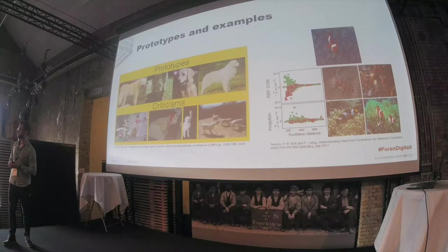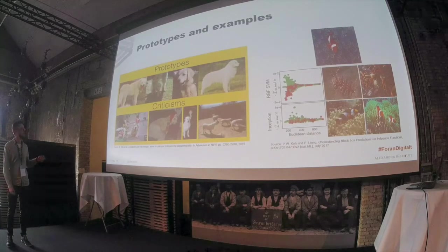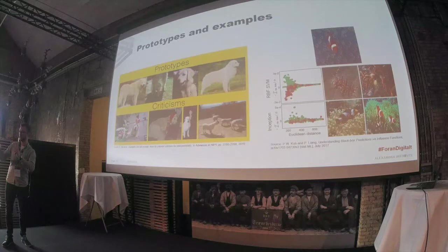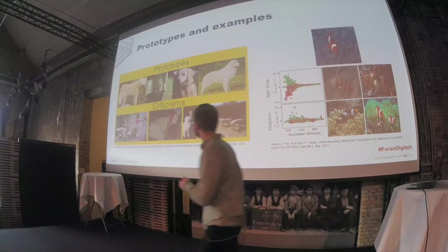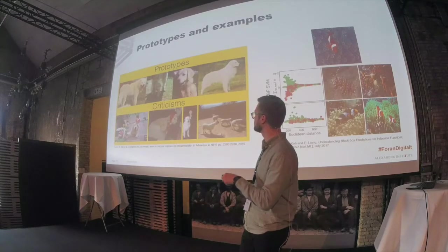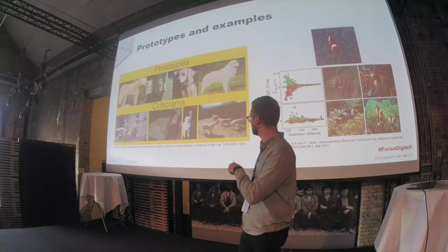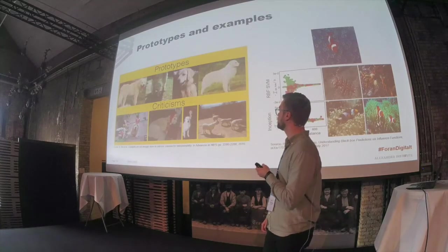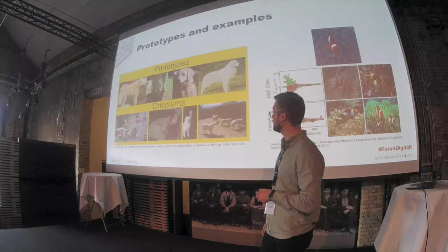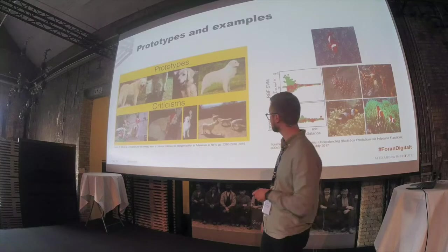You can also look at examples in the training data. One approach finds the most representative data points in your dataset, and then finds those points furthest from the prototypes but still in the same class. For golden retrievers, it finds the most representative images and also those still labeled as golden retrievers but looking different — like ones with costumes. This helps understand the boundaries of your data, so you can be sure the model also detects golden retrievers with bunny ears, for example.